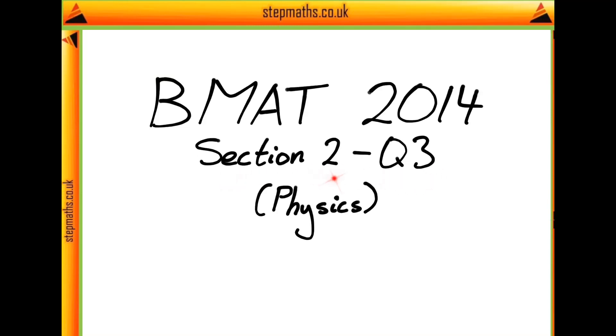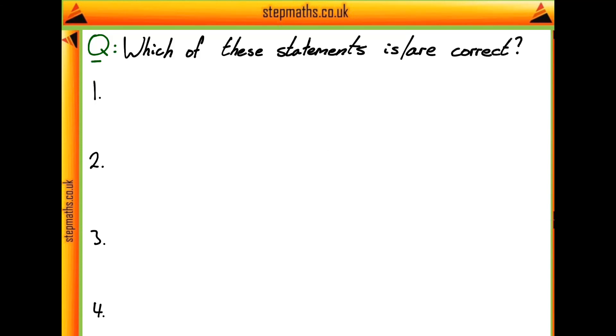Here we're going to look at question 3 from section 2 of the BMAT 2014 paper. So in this question we're given four statements and asked which of these statements is or are correct if there's multiple.